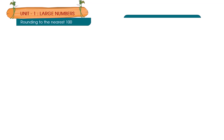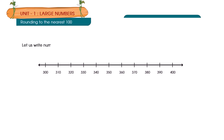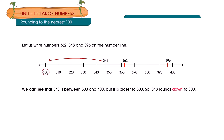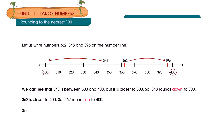Rounding to the nearest 100: let us place 362, 348, and 396 on the number line. 348 is between 300 and 400, but it is closer to 300, so 348 rounds down to 300. 362 is closer to 400, so 362 rounds up to 400. Similarly, 396 is closer to 400, so 396 rounds up to 400.